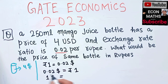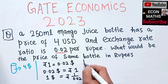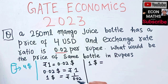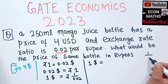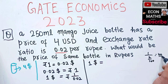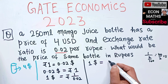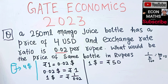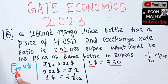Using the unitary method, we can find that one dollar equals 1 upon 0.02. Since 0.02 is 2 upon 100, this comes out to be 100 upon 2, which is equal to 50. So one dollar is equal to 50 rupees.